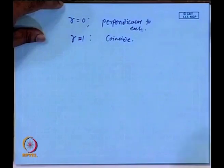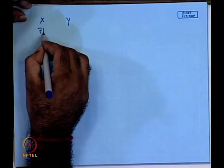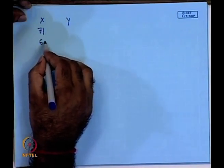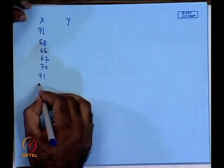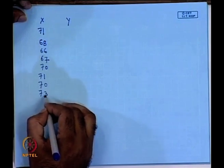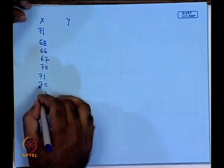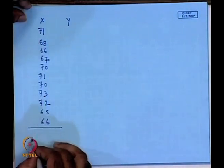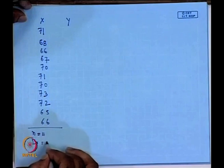Now we will explain with a suitable numerical example. We have an x series: 71, 68, 66, 67, 70, 71, 70, 73, 72, 65, 66. So n = 11. The sum of x equals 759, and therefore x̄ = 759/11 = 69.